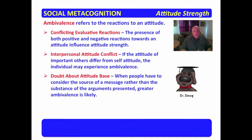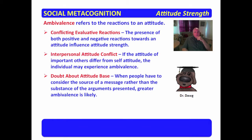Doubt about one's attitude base is going to weaken acceptance of the attitude. When people have to consider the source of a message rather than the substance of the arguments presented, greater ambivalence is likely. If you're in a place where the messenger is questioned, you may not have a strong opinion about the message. In logic, one of the fallacies is called poisoning the well — discrediting the messenger so you don't have to answer the message. If you have doubt about the source of an attitude, that attitude is going to be weaker and you will have more ambivalence towards it.